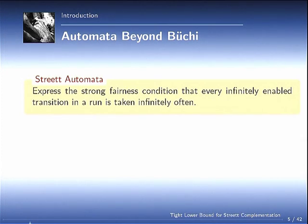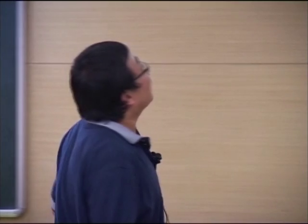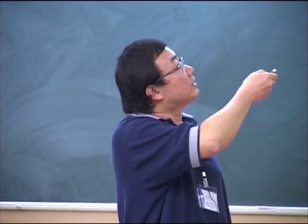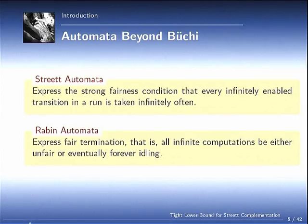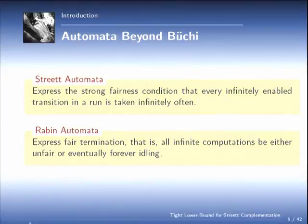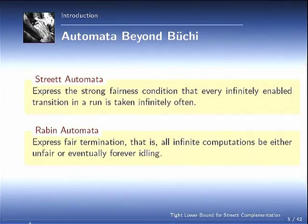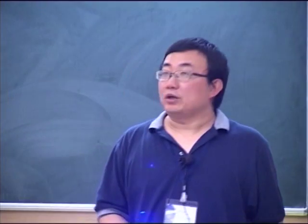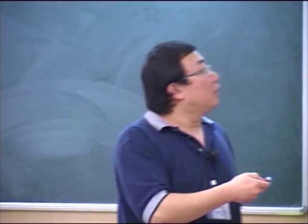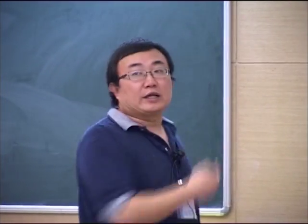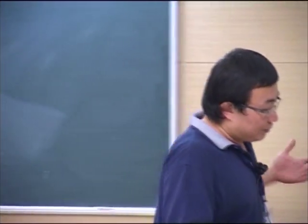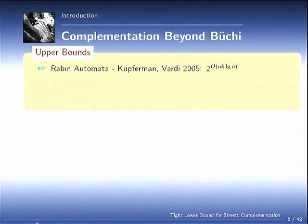But there are automata beyond Büchi. Two guys are very important. One guy is called the Streett automata. So this is not a typo. And another is called the Rabin automata. Streett automata can express the strong fairness conditions. Basically, if a transition is enabled infinitely often, it's going to be taken infinitely often. And the Rabin automata is a dual of Streett automata. It can express something called fair termination. That every infinite computation is unfair. So that means the program terminates fairly.